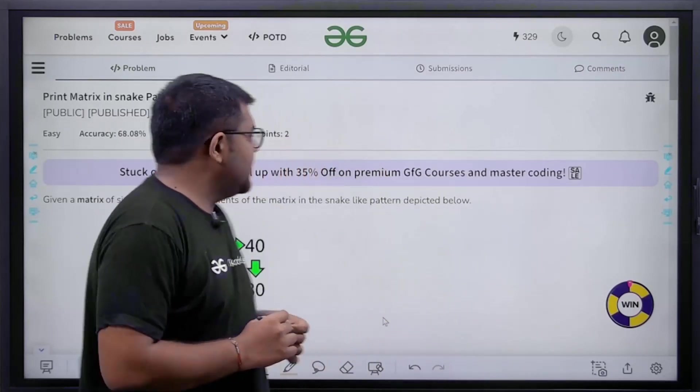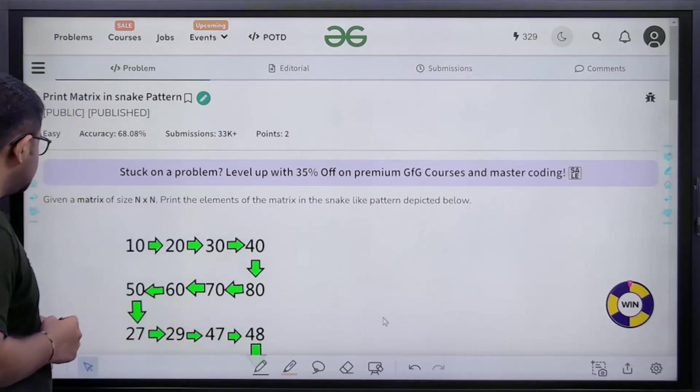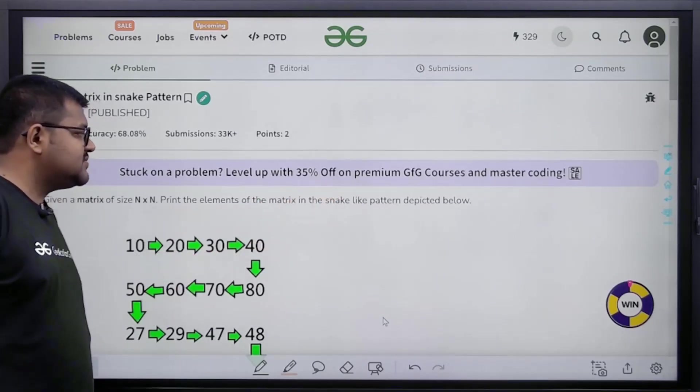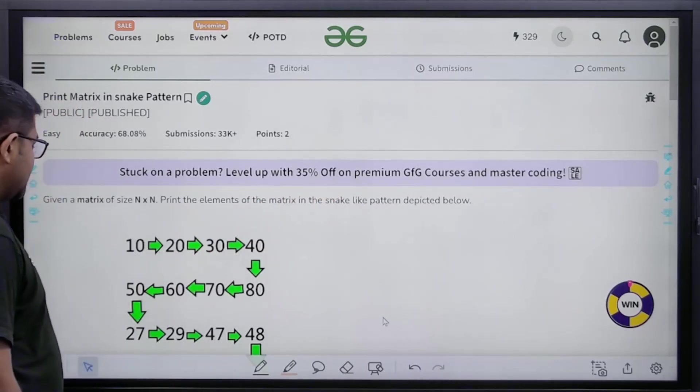First of all, let us start by understanding the question. What does the question say? Given a matrix of size n cross n, print the elements of the matrix in the snake pattern like the pattern depicted below.